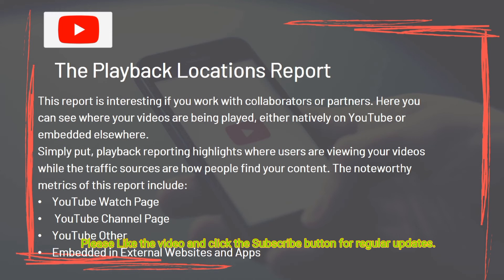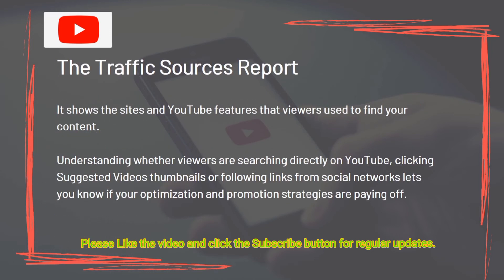The noteworthy metrics of the Playback Locations Report include YouTube Watch Page, YouTube Channel Page, YouTube Other, and Embedded in External Websites and Apps. The Traffic Sources Report shows the sites and YouTube features that viewers use to find your content. Understanding whether viewers are searching directly on YouTube, clicking suggested video thumbnails, or following links from social networks lets you know if your optimization and promotion strategies are paying off.